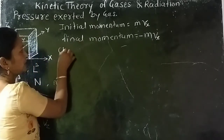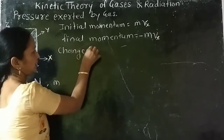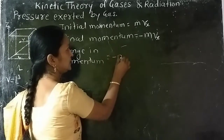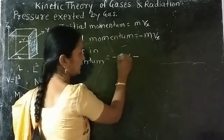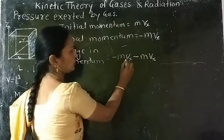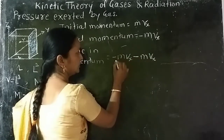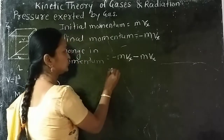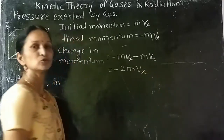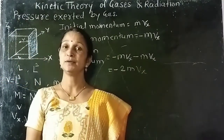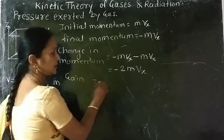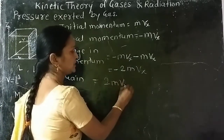Its final momentum is m as it is, and velocity gets reversed, therefore it is −m·Vx. Change in momentum equals final momentum minus initial momentum, which gives −m·Vx − m·Vx = −2m·Vx. This momentum is imparted by the molecule to the wall. Therefore, the gain in momentum by the wall is 2m·Vx.